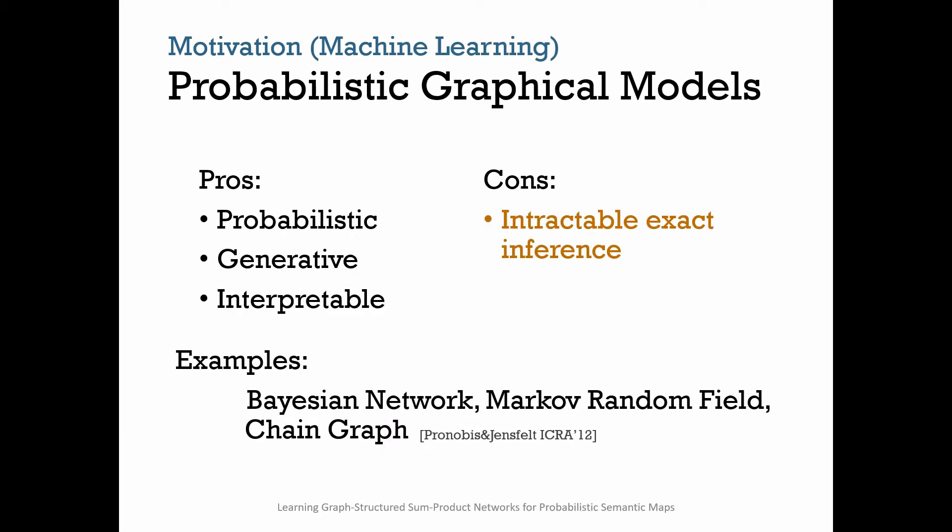We know that semantic maps change and evolve. For modeling such dynamic structures, traditional template probabilistic graphical models are the first choice. They are probabilistic, generative, and interpretable. Unfortunately, inference in PGMs is generally intractable, and higher-order models pose a challenge even to approximate methods.